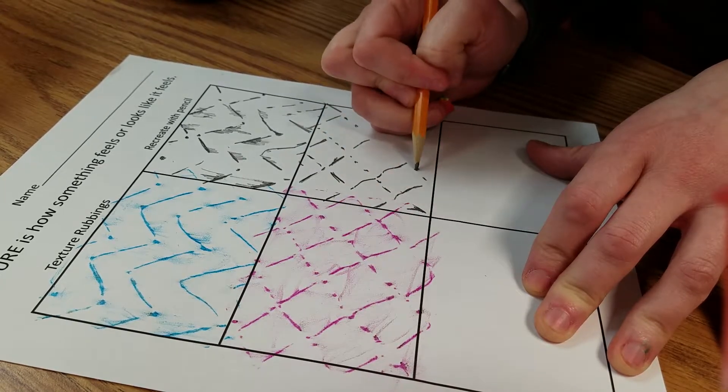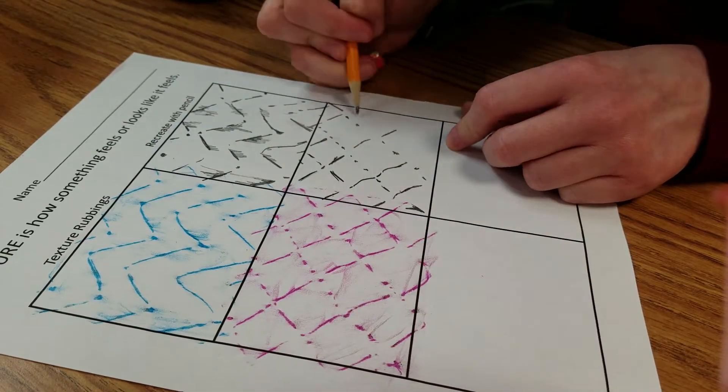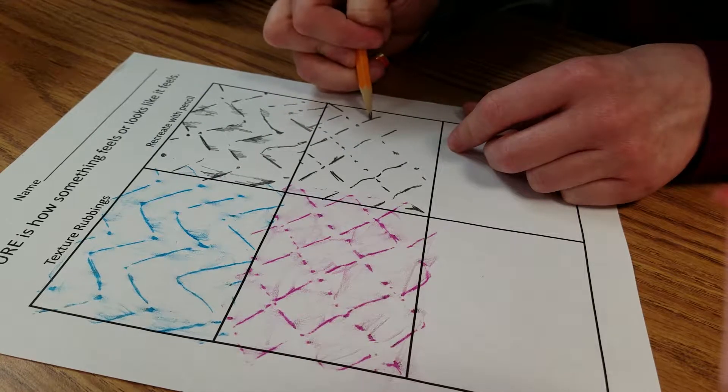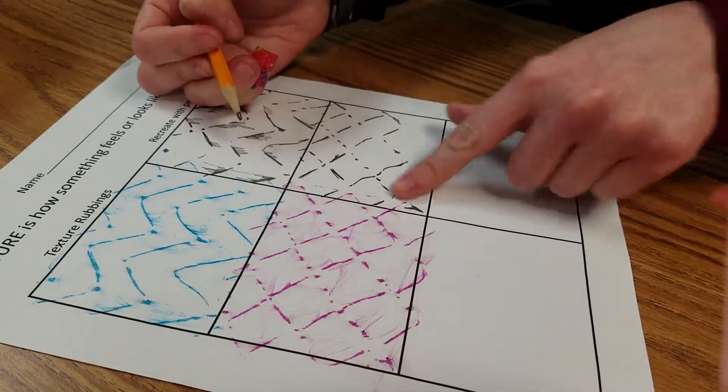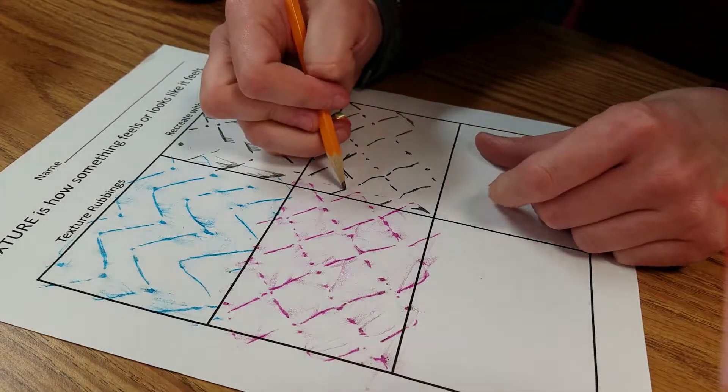When you get done doing all these lines right through here, which I'll need to finish, you can come through here with your pencil and just sort of do the lighter marks. See where the crayons have smudged.